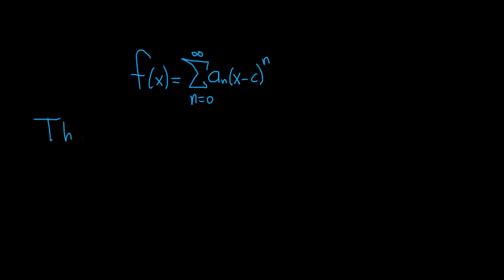If this is the case, then it follows that a sub n is given by the following formula. So it's the nth derivative. The parentheses around the n indicates that it's a derivative. The nth derivative evaluated at c over n factorial.